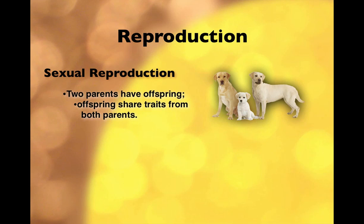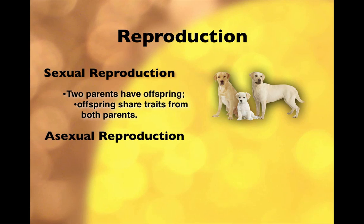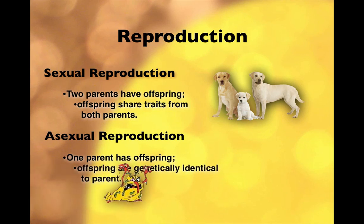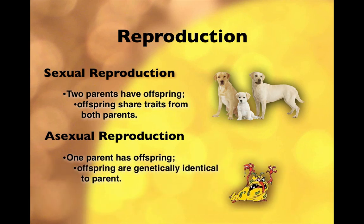The other type of reproduction is called asexual reproduction. With asexual reproduction, there's only one parent producing the offspring, so the offspring ends up genetically identical to the parent.